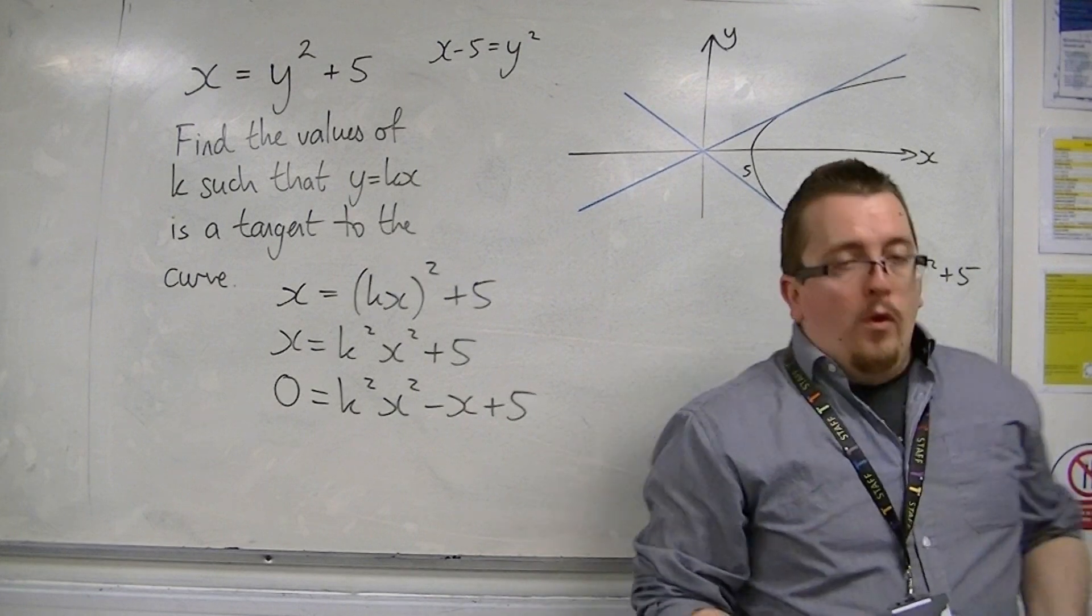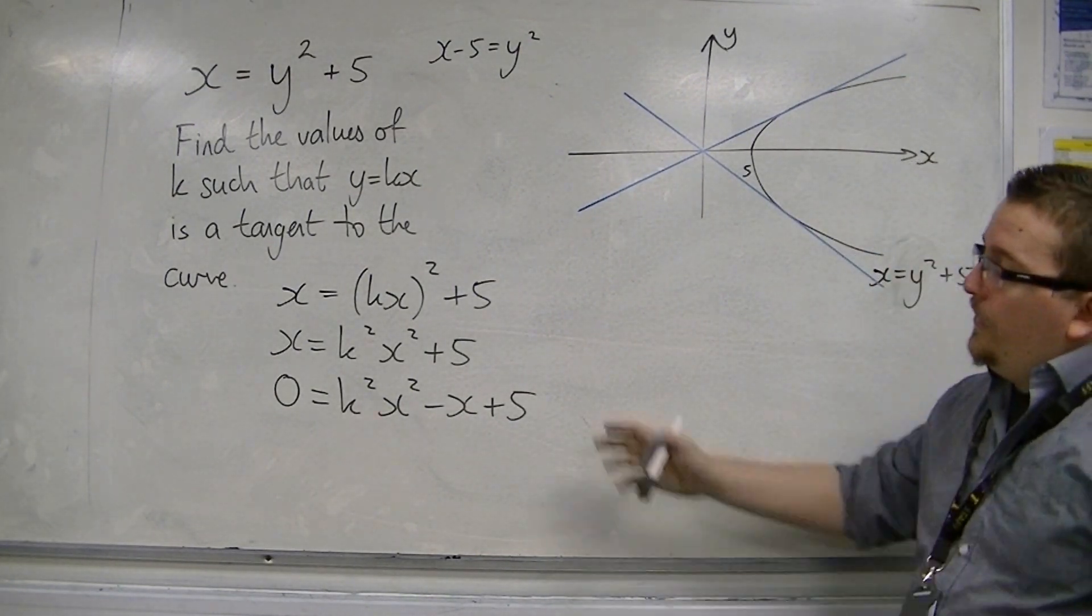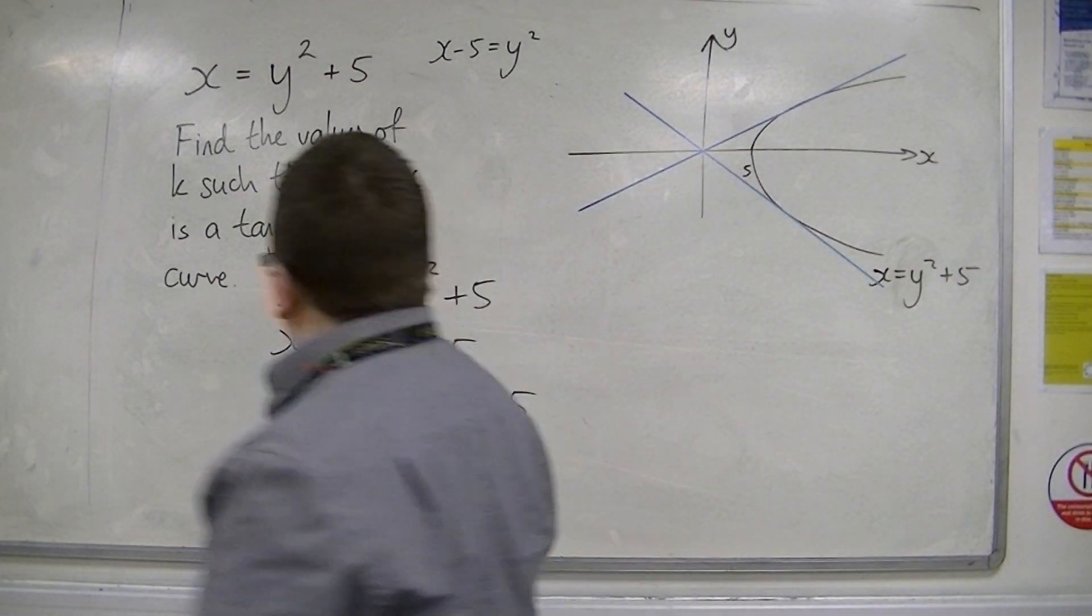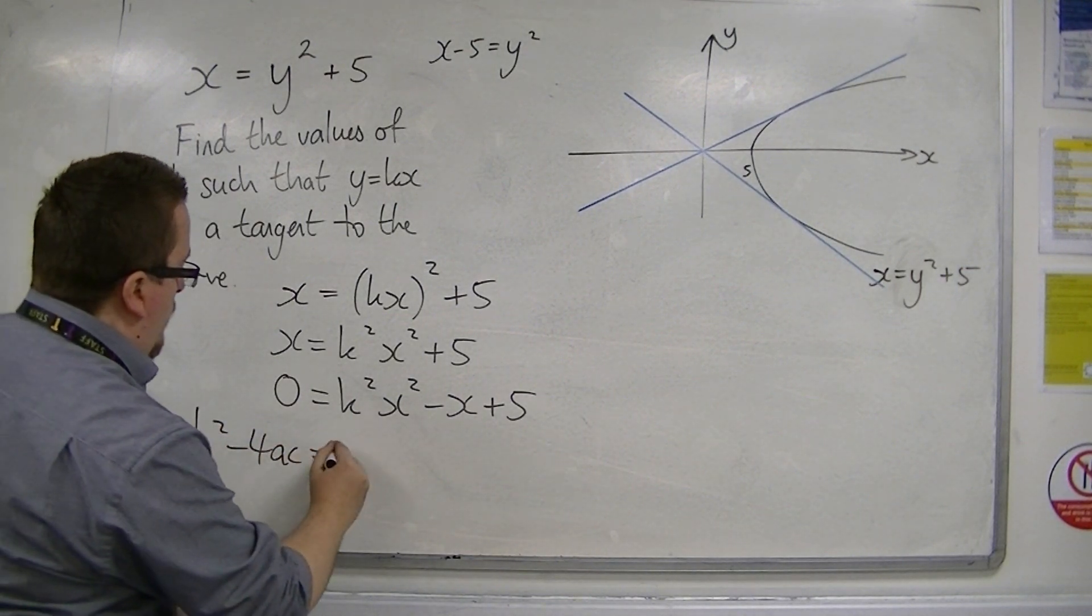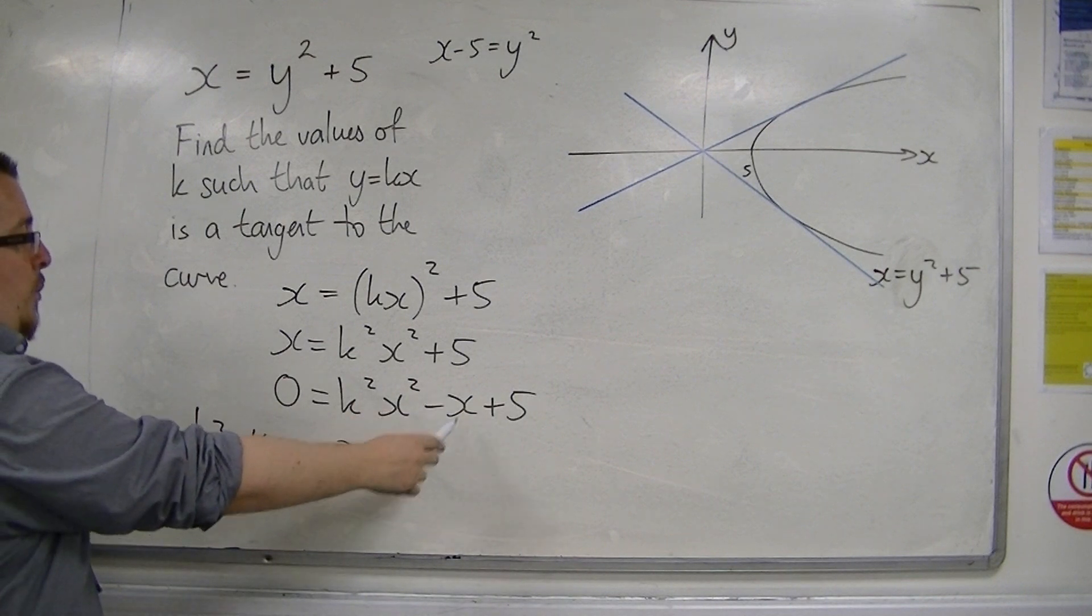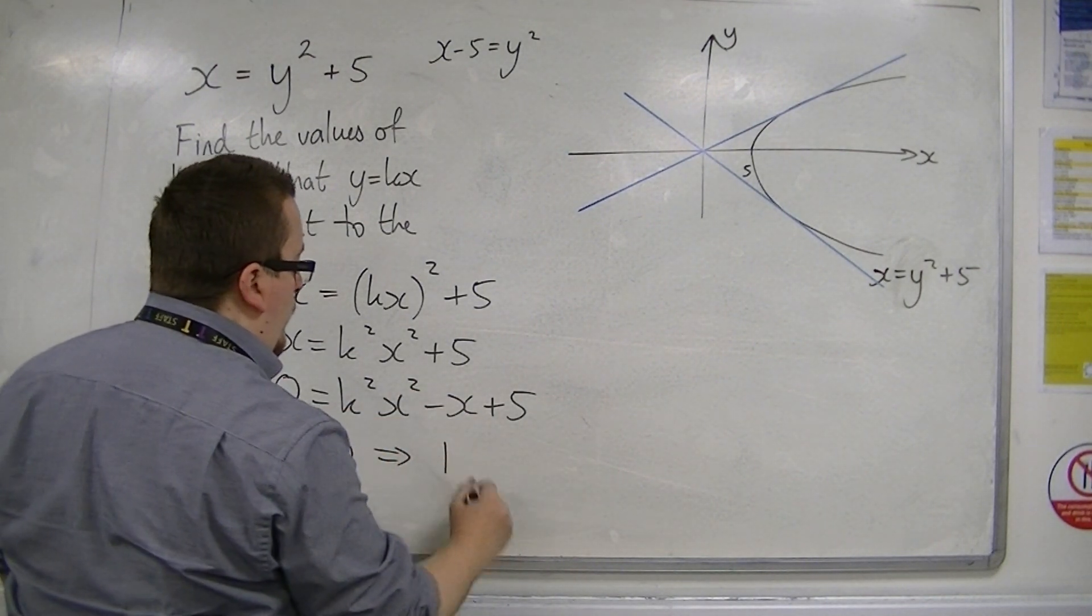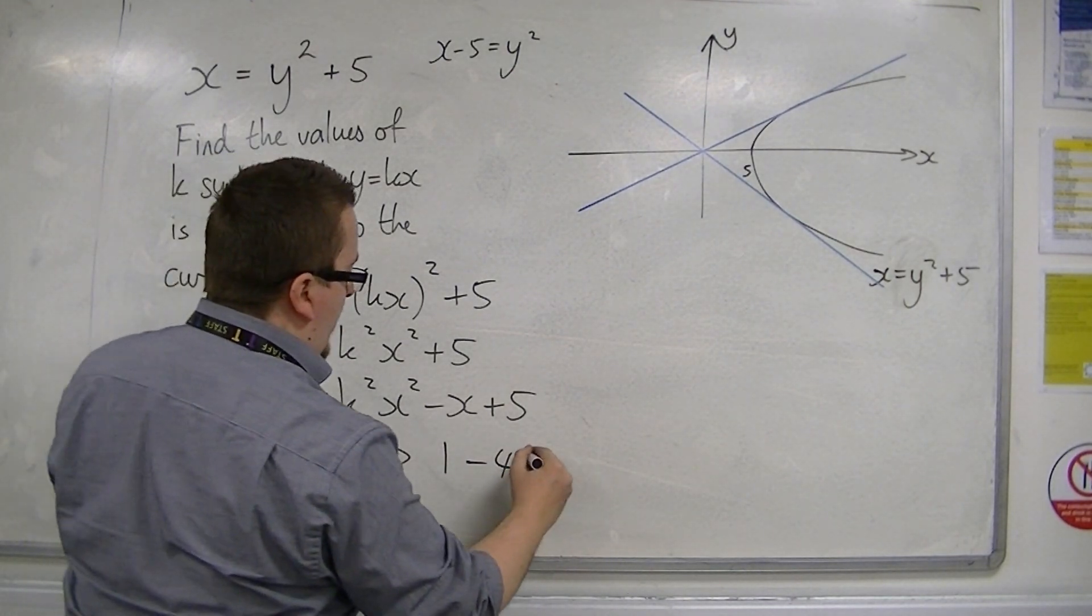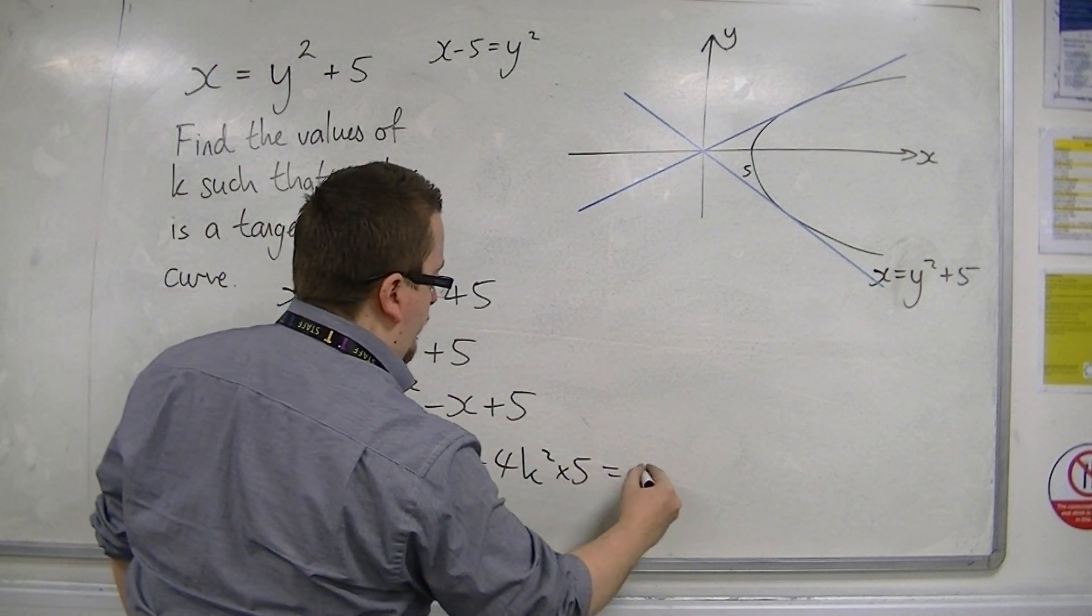Now, I want these to be tangent lines. So I'm going to need the discriminant of this equation to be equal to 0. So b squared minus 4ac equals 0. So a is k squared, b is minus 1, and c is 5. So b is minus 1, so I get minus 1 squared, so that's just 1. Take away 4 lots of k squared times 5 equals 0.